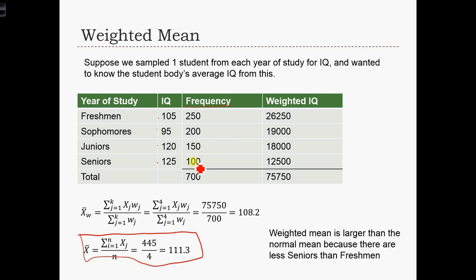So when we calculate the average IQ without taking into consideration these weights, we're giving equal importance to each of these IQs. But really, we should be increasing the importance of the freshman and sophomore IQs, because we have many more of those types of students. And we should be decreasing the influence of these junior and senior IQs, because we have far fewer of them.